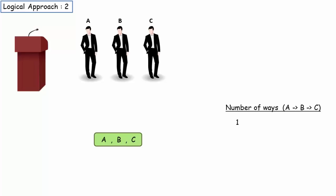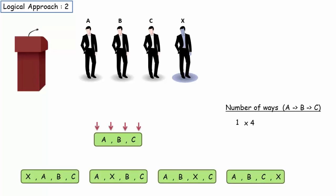Now consider 4th person X joins the arrangement. He can speak before A or in between A and B or between B and C or after C. So, the number of ways will now become 1 times 4. These 4 ways can be represented as here.